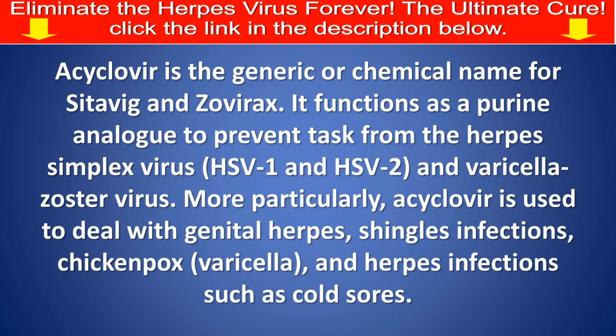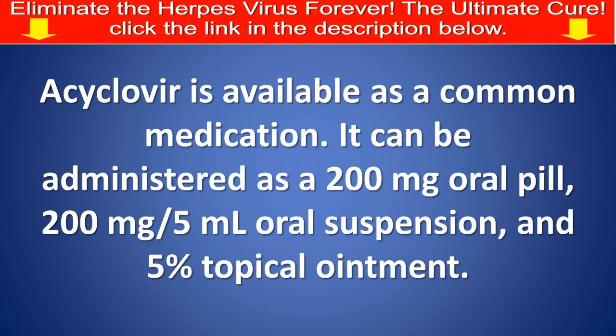Acyclovir is the generic name for Cetavig and Zovirax. It functions as a purine analog to prevent replication of the herpes simplex virus — HSV-1 and HSV-2 — and varicella zoster virus. More particularly, acyclovir is used to treat genital herpes, shingles infections, chickenpox, varicella, and herpes infections such as cold sores. Acyclovir is available as a generic medication.